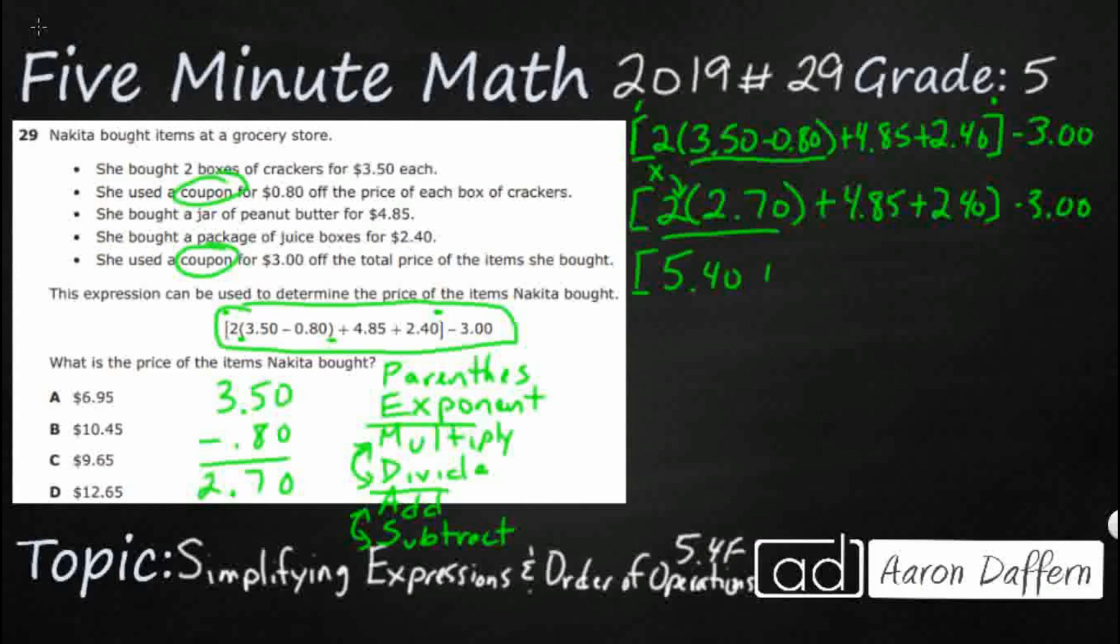So now we're just going to take 5.40 and we're going to add 4.85 to it. And we're going to add 2.40 to it. And that's going to then close out our brackets. And finally, remember, we got that minus 3 at the end. So let's just go ahead and see what we have there. Since they're all addition, let's do them all together. 5.40, 4.85, 2.40.